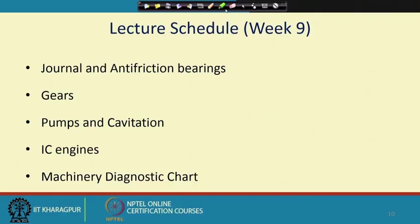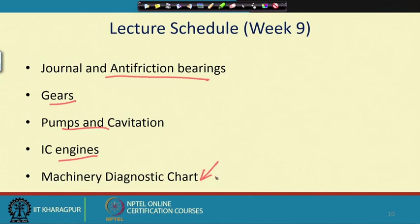In Week 9 the focus will be on a few more machine components: journal bearings, gears, pumps, and engines. We will conclude with a machinery diagnostic chart where the characteristics of faults in frequency analysis are related to the faults themselves. This diagnostic chart will help you diagnose a fault.